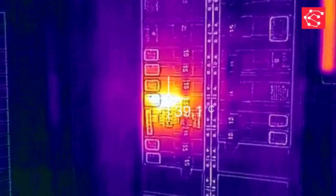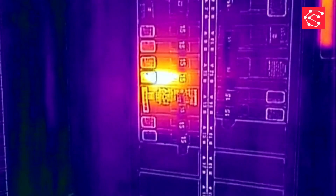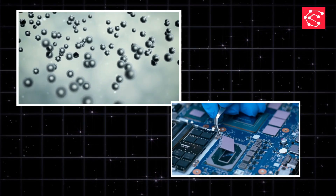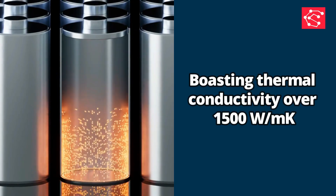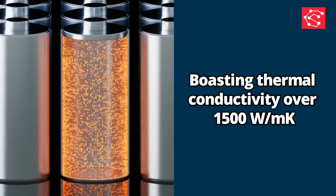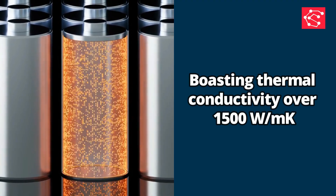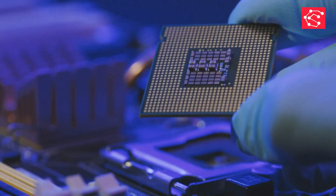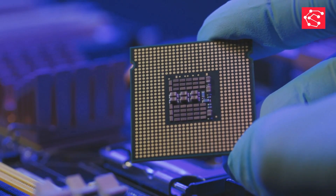Heat management is equally important, and materials like graphene thermal pads, boasting thermal conductivity over 1,500 watts per meter Kelvin, provide exceptional heat dissipation for high-power chips.